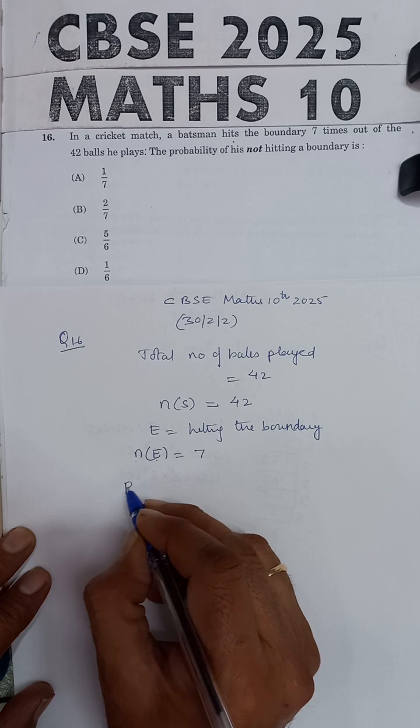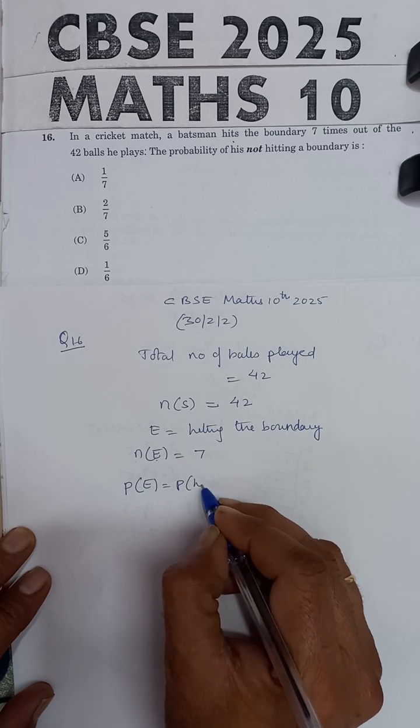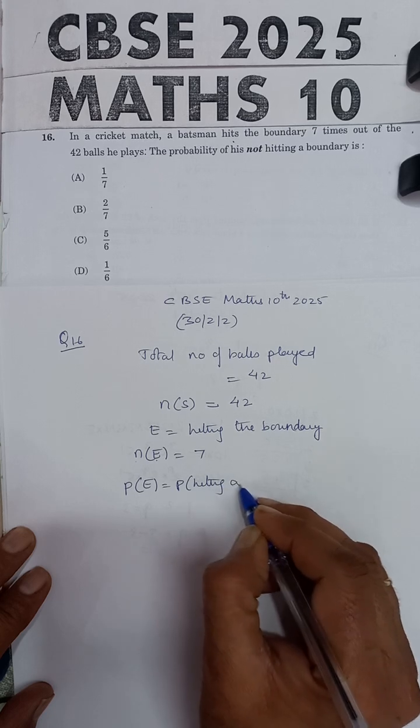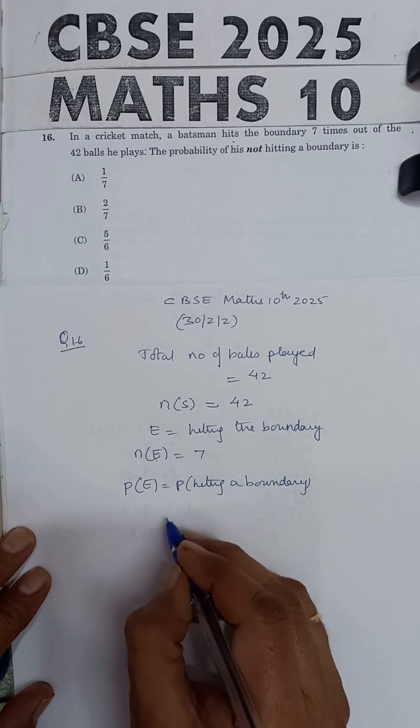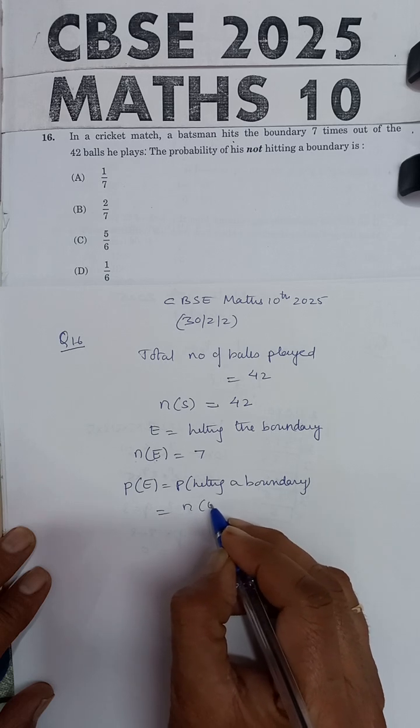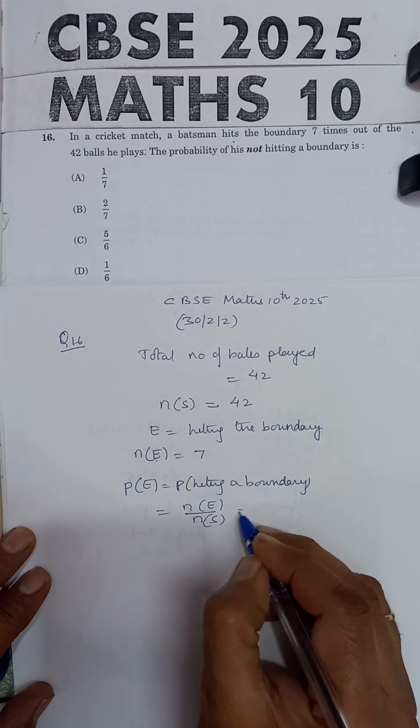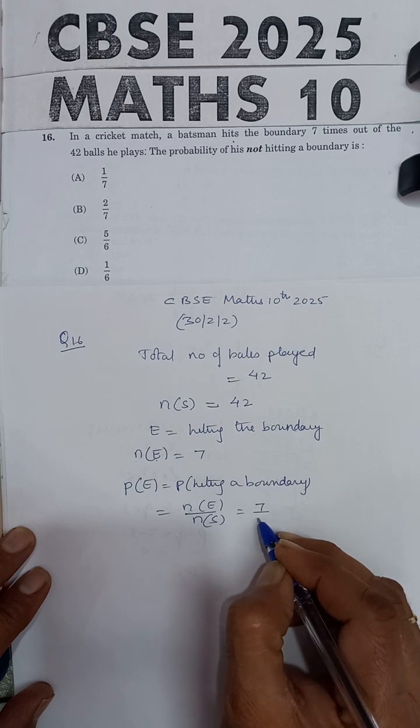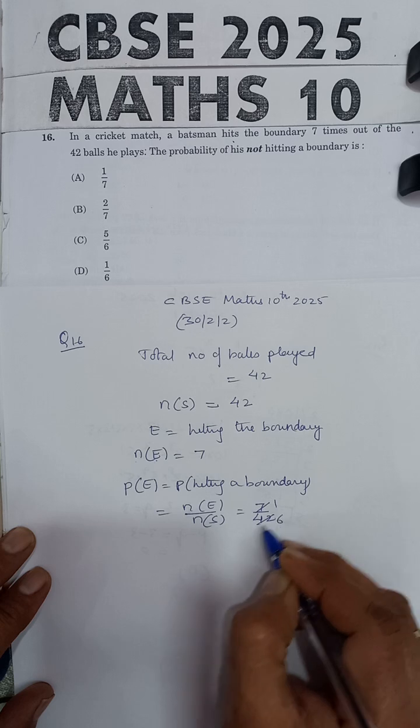So you can find out the probability of happening of E. That means the probability of hitting a boundary can be calculated. This will be equal to N(E) upon N(S). And N(E) is 7, N(S) is 42. 7 into 6 is 42, so probability of hitting a boundary is 1 by 6.